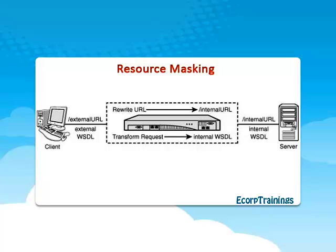Resource Masking Service: DataPower can rewrite URLs to only allow through specific methods, to change the method names requested, to modify the message format in transit, and in general to make the front-end service look nothing like the back-end.